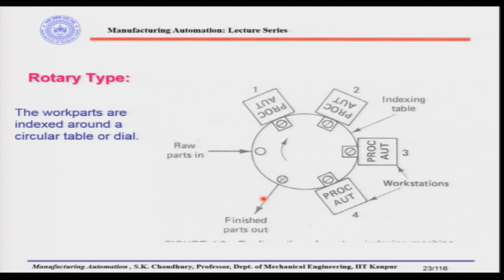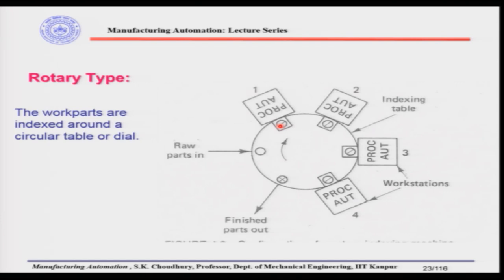In the rotary type, the dial or table is an indexing table — it rotates and stops for a dwell period while the machine processes the part or the assembly is completed. The time period during which it stops is called the dwell time, and the time it moves from one place to another is called the indexing time. This concept is also seen in the Geneva mechanism, which is commonly used in dial indexing machines to perform the indexing and dwelling sequence.